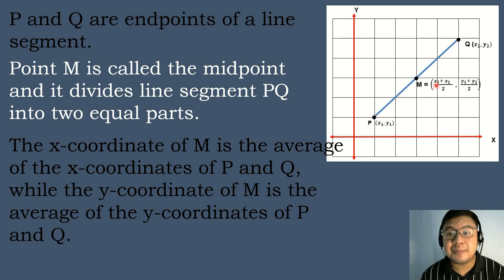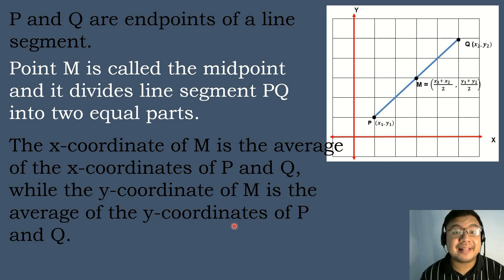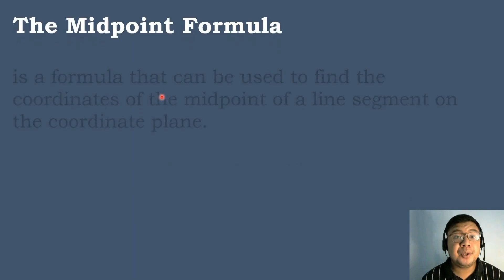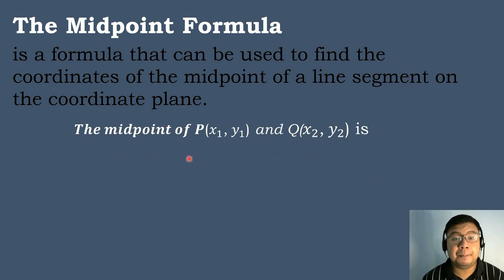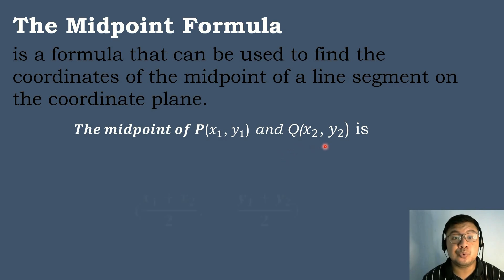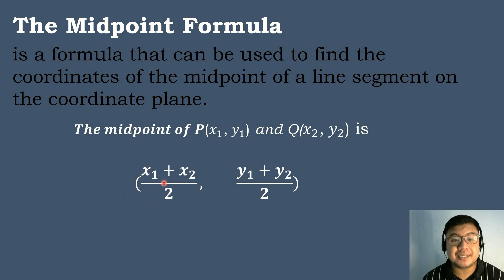So we have x sub 1 plus x sub 2 divided by 2. And then to get the y-coordinate or the ordinate of M, we will get the average of the y-coordinates of point P and point Q, which is y sub 1 plus y sub 2 divided by 2. The midpoint formula is a formula that can be used to find the coordinates of the midpoint of a line segment on the coordinate plane. The midpoint of point P, which has a coordinate of (x sub 1, y sub 1), and point Q, which has a coordinate of (x sub 2, y sub 2), is the ordered pair (x sub 1 plus x sub 2 over 2, y sub 1 plus y sub 2 over 2).